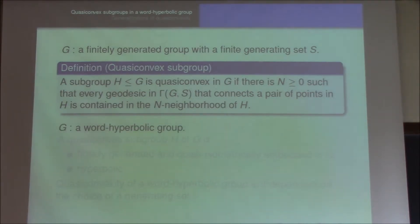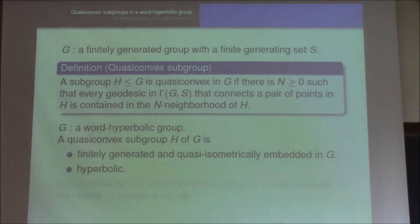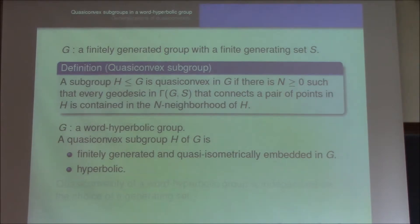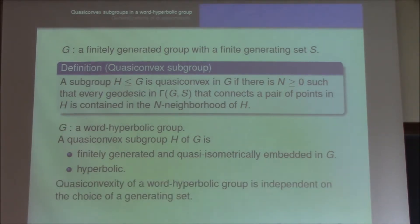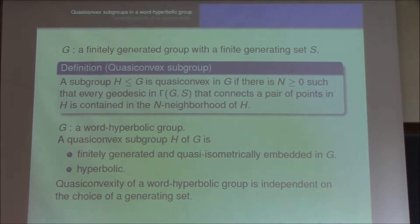In particular, when G is a word hyperbolic group, a quasi-convex subgroup is finitely generated and quasi-isometrically embedded in G, so that it is a hyperbolic space itself. And by hyperbolic geometry, quasi-convexity of a word hyperbolic group is independent of the choice of a generating set.